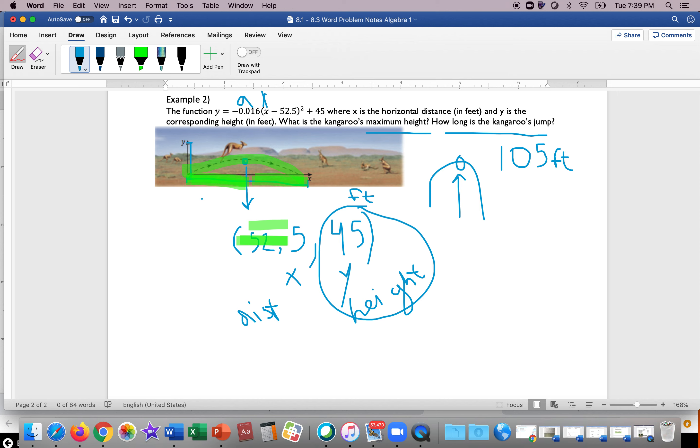Now if it said, how far out was the kangaroo in terms of its jump when it reached the max height, you could say 52.5. But anyways, to answer the two questions: what's the kangaroo's maximum height? It's the y-coordinate of the vertex, 45 feet. How long is the jump? We have to double that x-coordinate distance to complete that full jump, so 52.5 plus 52.5 gives us 105 feet.